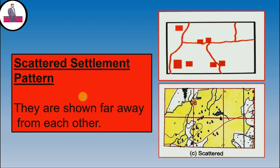The next one is scattered settlement. When we interpret scattered settlement, remember the definition: they are shown far away from each other. These red boxes are shown far away from each other, meaning they are not close together. You can see on the diagram they are shown far away from each other, so they will be called scattered settlement. In your textbook you can see the red boxes are very small and they are not close — they are scattered, far away from each other. So when you are asked to interpret what type of settlement is shown in a grid, you would write scattered settlement.